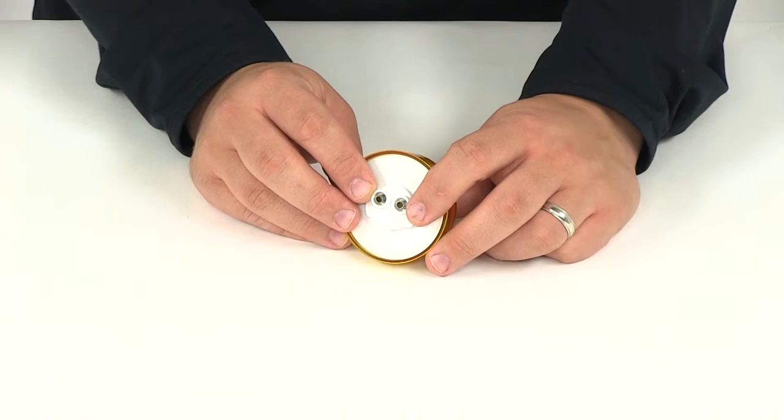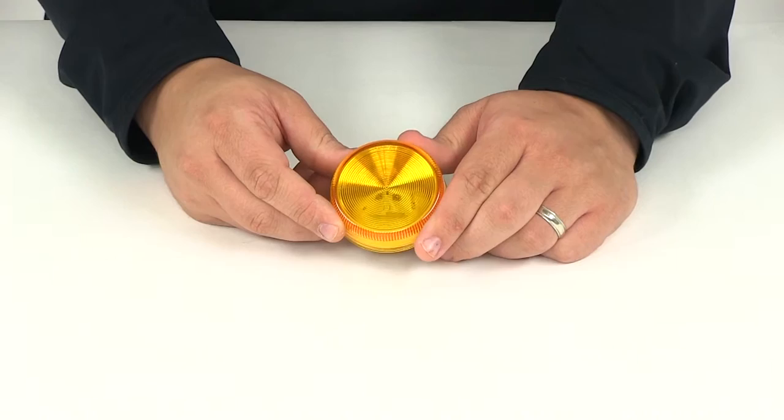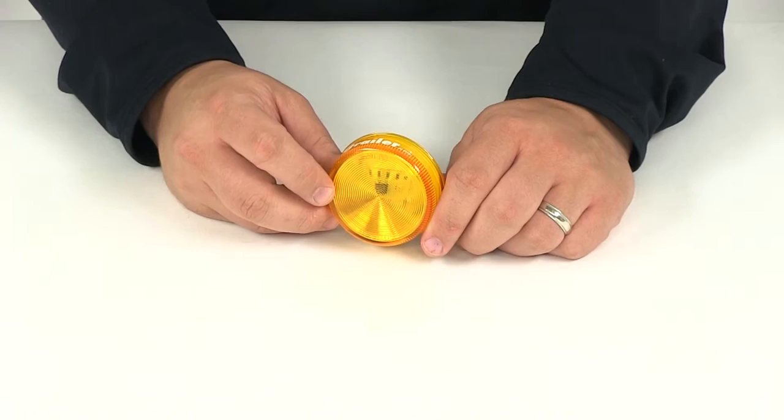Here on the back side is our connection point for our wiring. This is designed to accept your industry standard two-prong plug. It's also designed to be mounted with a grommet. The grommet and the pigtail plug are going to be sold separately. You can find those here on our website using part number 162-18K.